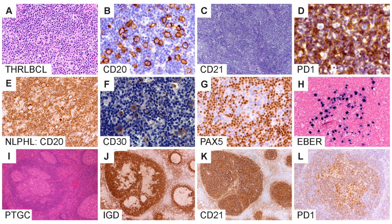It is sometimes very difficult to distinguish nodular lymphocyte predominant Hodgkin lymphoma from lymphocyte-rich classic Hodgkin lymphoma, which is the closest differential diagnosis. Figures I through L show progressive transformation of the germinal center (PTGC), characterized by IgD-positive mantle zone B cells shown in figure J, CD21-positive follicular dendritic cell meshwork, and PD-1 positive T cells in the affected nodule.